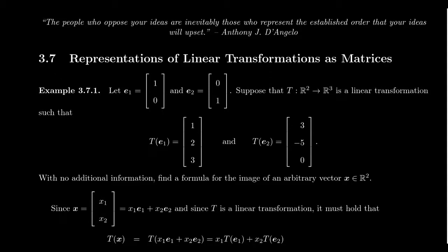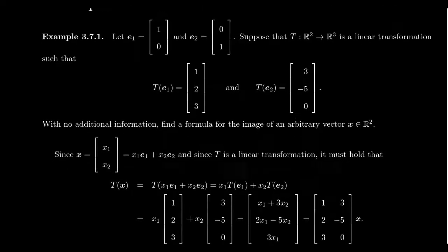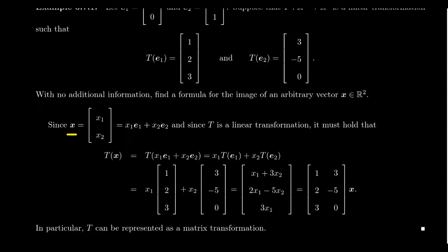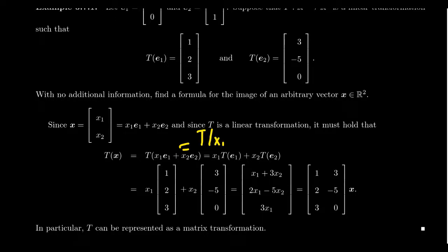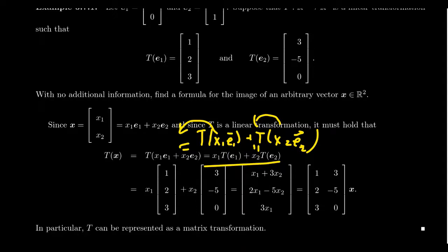Those two ingredients together mean we know exactly what this transformation will do to any vector. Take a generic vector X in R2 with coordinates X1 and X2. This vector can be decomposed as X1·E1 + X2·E2. Since T is a linear transformation, T(X) = T(X1·E1 + X2·E2). The sum inside a linear transformation becomes a sum outside, and each scalar can be brought out, giving us X1·T(E1) + X2·T(E2).